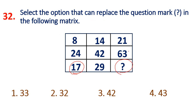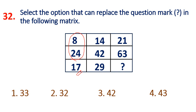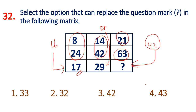Now with the question mark position, we look at the two numbers given and find the pattern. The relation is: take the number, divide by 3, then add 1. So 42 divided by 14 gives 28, plus 1 is the pattern. Then 63 divided by 21 gives 42, plus 1 gives 43. So option 4 is the answer.